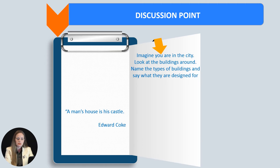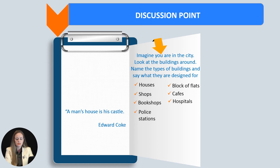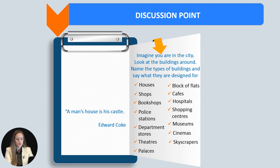Imagine you are in the city — look at the buildings around. Let's name the types of buildings. We can see houses, blocks of flats, shops, cafes, bookshops, hospitals, police stations, shopping centers, department stores, museums, theaters, cinemas, skyscrapers, palaces, and hotels.